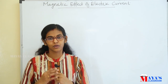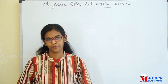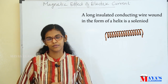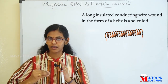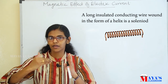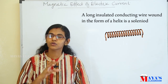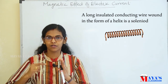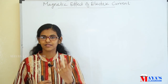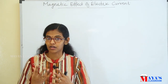In this class, we are going to discuss how much electricity flows in the magnetic field around a solenoid. What is a solenoid? It is a long insulated conducting wire in the form of a helix. It is called a solenoid.